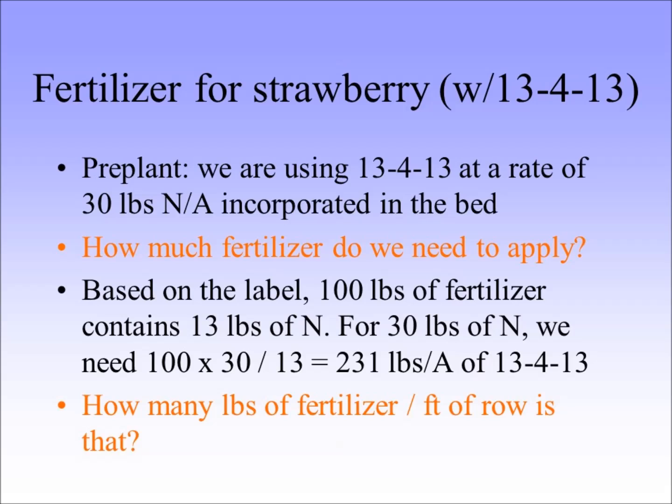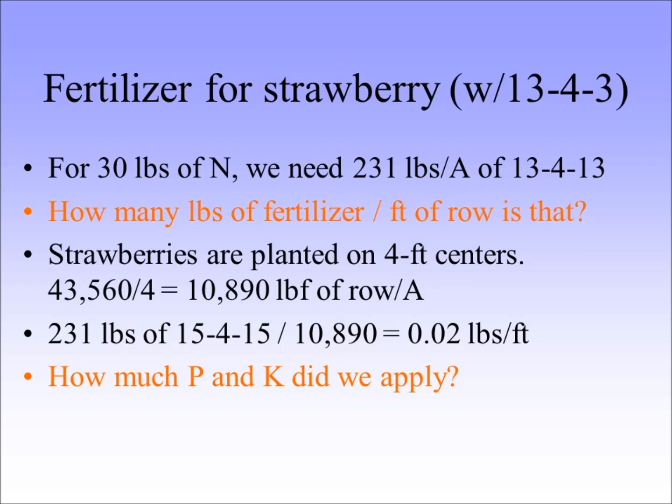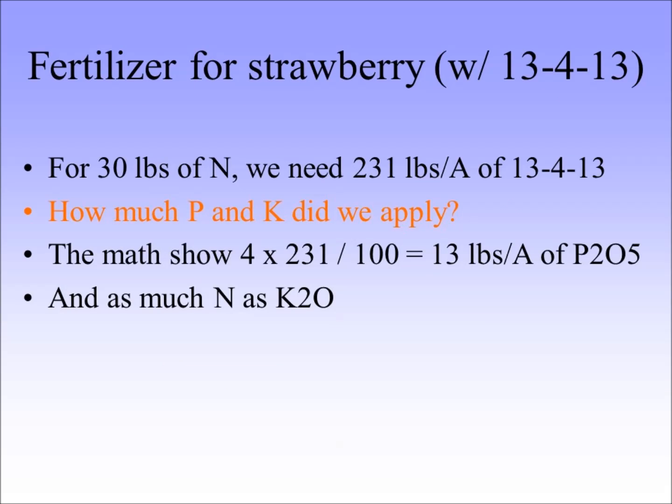Good — we know how to do that. Now the question is: how many feet of fertilizer is that per row? You divide 43,560 by 4 to get 10,890, and 231 pounds divided by 10,890 is 0.02 pounds of that fertilizer per foot of row. It's the same kind of math. The question is how much N and K did we apply. We applied the same amount of K, and we did apply a little bit of P that we didn't want.